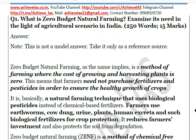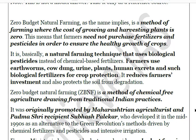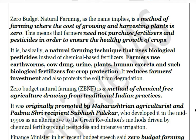It is a type of farming which uses biological pesticides and fertilizers instead of chemical-based ones. Farmers use earthworms, cow dung, urine, plants, human excreta, and other biological materials for crop protection and production. It reduces farmers' investment, protects the soil from degradation, and promotes chemical-free agriculture drawing from traditional Indian practices.